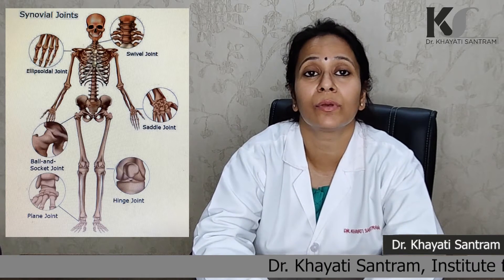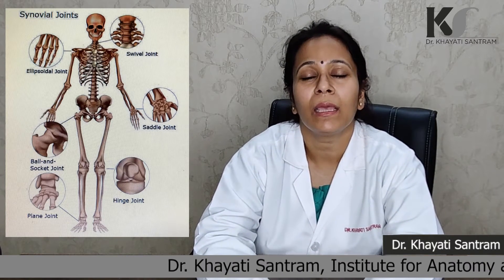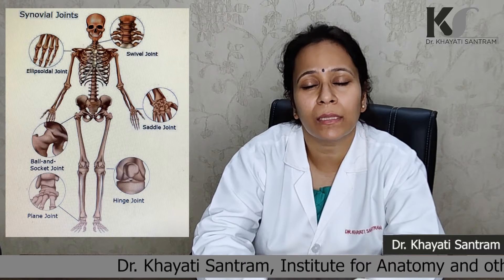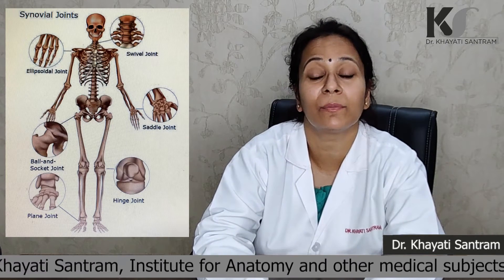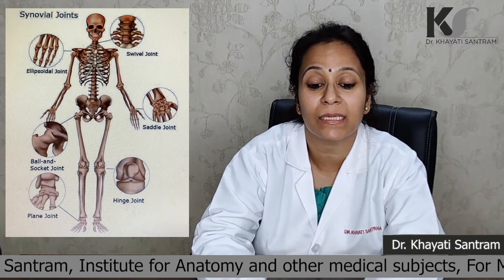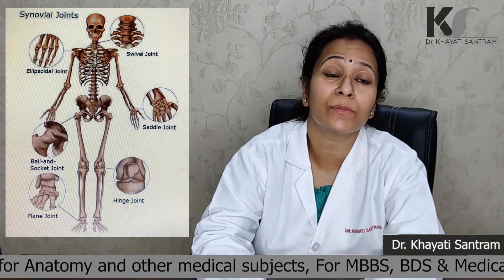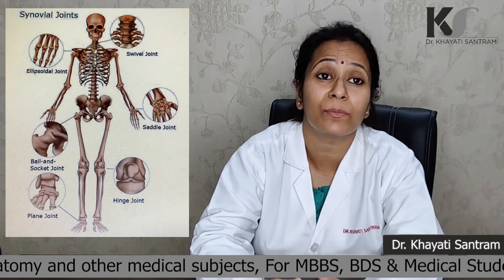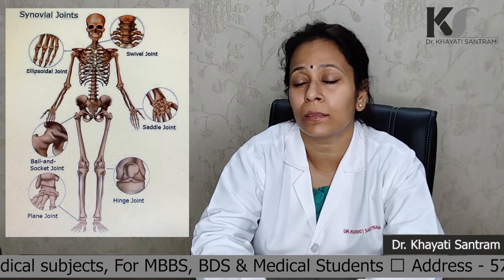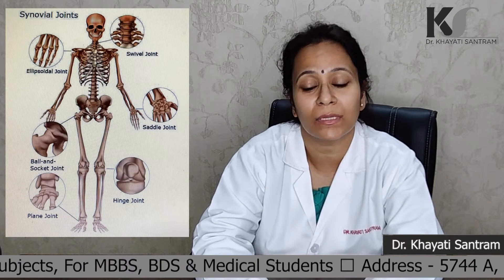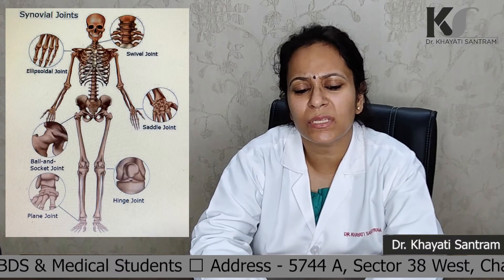For uniaxial movement, we have hinge and pivot joints. Where movement occurs along two axes, there are ellipsoidal, saddle, and condylar joints. If the axis is more than two — that is, multiaxial — then we have the ball and socket joint. So joints are very important.